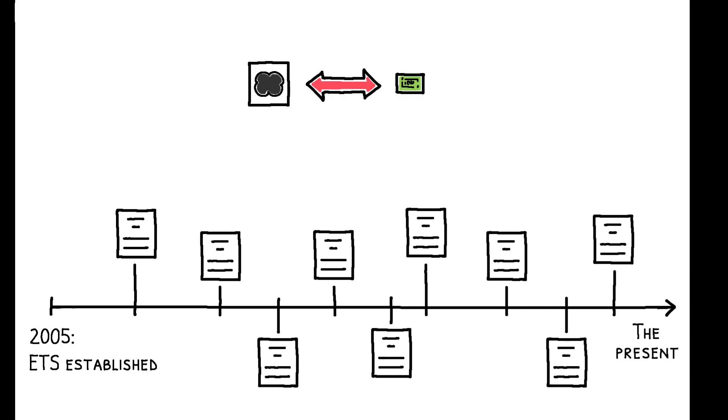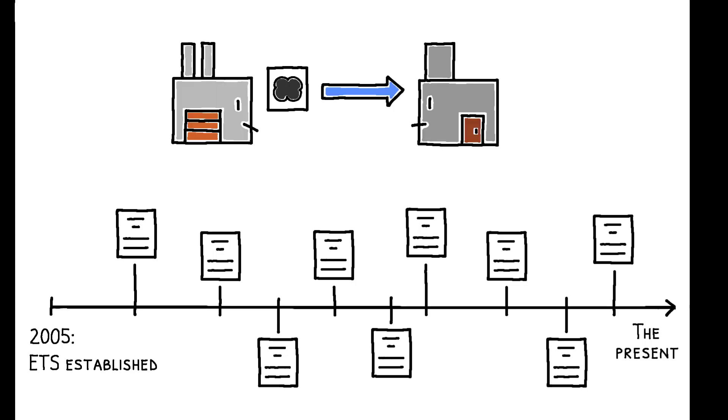In particular, he identifies 126 regulatory events between 2005 and 2019 that affected the supply of emission allowances and uses high-frequency data from markets where allowances are traded to measure the variation in carbon prices in a narrow window around each event.